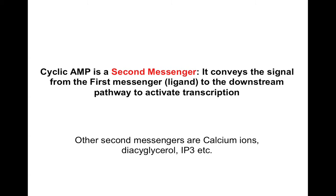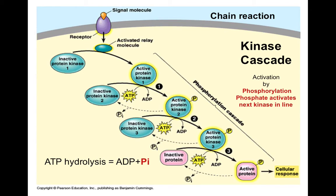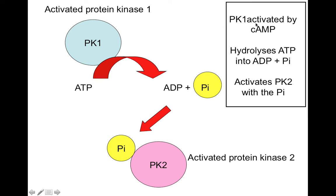So the signal is carried all the way through to the nucleus to switch on genes which will then cause a cellular response. Cyclic AMP is the second messenger — it conveys the signal from the first messenger or ligand down to the downstream pathway to activate transcription. I also want to mention the kinase cascade. Usually there's more than one protein kinase, and each protein kinase is activated by a phosphate and in turn phosphorylates the next kinase in line. So PK1 is activated by cyclic AMP, it phosphorylates PK2, PK2 phosphorylates PK3, PK3 phosphorylates PK4, and so on, transducing the signal.